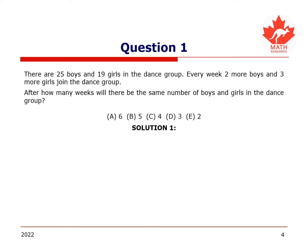Here is the first solution. At the beginning, the difference between the number of boys and girls in the dance group is 25 minus 19, which equals 6. It is given that 2 more boys and 3 more girls join the club every week. Hence, after every week, the difference between the number of boys and the number of girls will decrease by 1. For example, after one week we have 27 boys minus 22 girls, which equals 5.